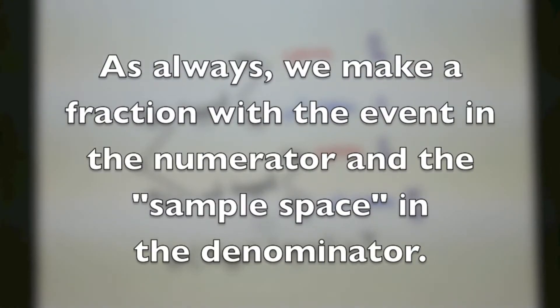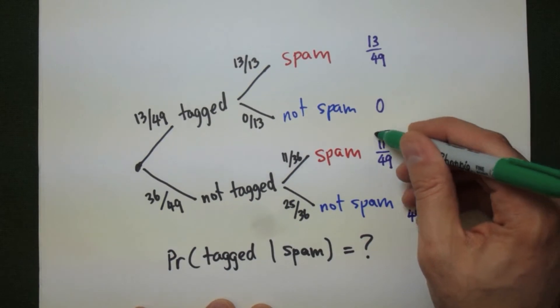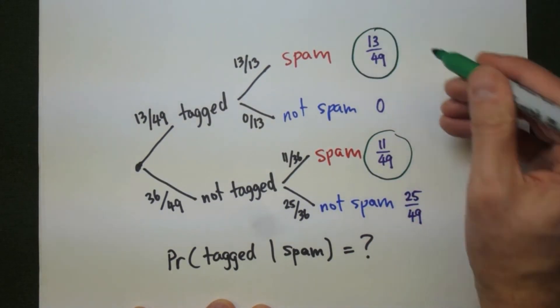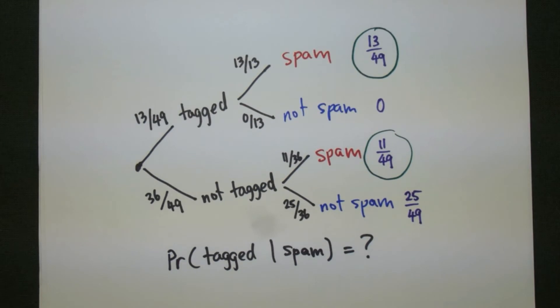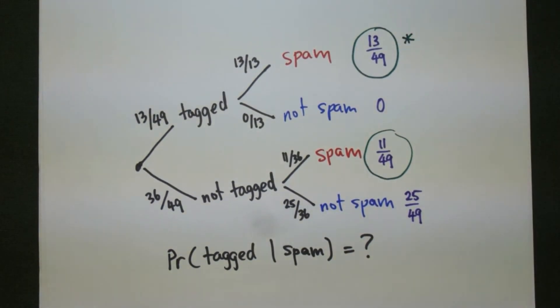We want to make a fraction. The fraction will have the event in the numerator and what we consider the sample space in the denominator. So what is our sample space in this case? We're given that it's spam, so we're only going to look at the branches that end up in us having spam. That's these two branches right here. Out of these, the numerator is going to have to be the ones that I'm looking for, the ones that were tagged.